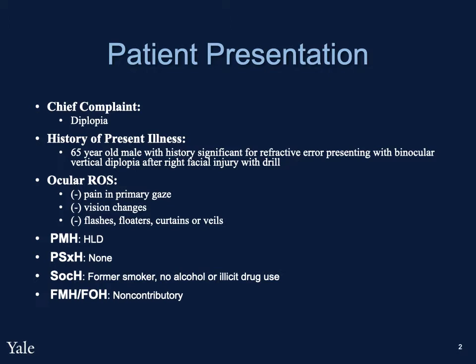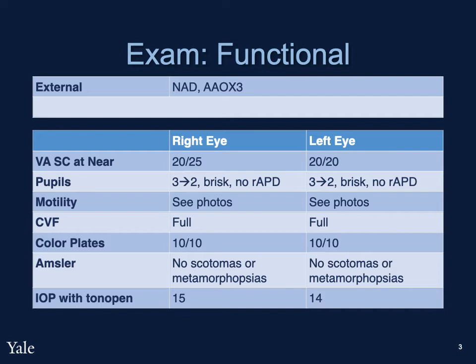Past medical, surgical, social, and family history were non-contributory. Near-uncorrected visual acuity was 20/25 in the right eye and 20/20 in the left. Pupils were symmetric and brisk without a relative afferent pupillary defect. Confrontational visual fields and color plates were full in both eyes.